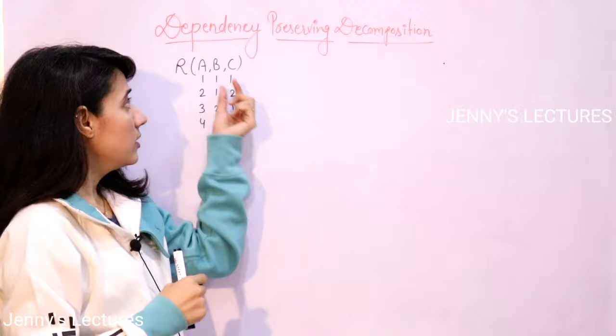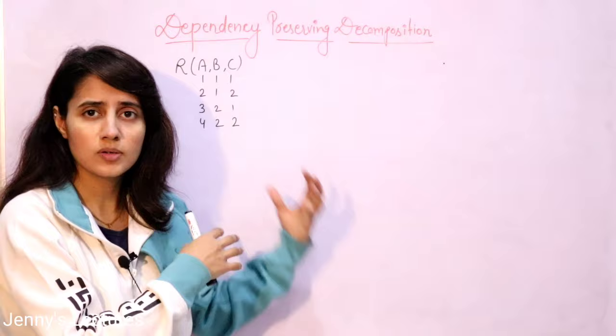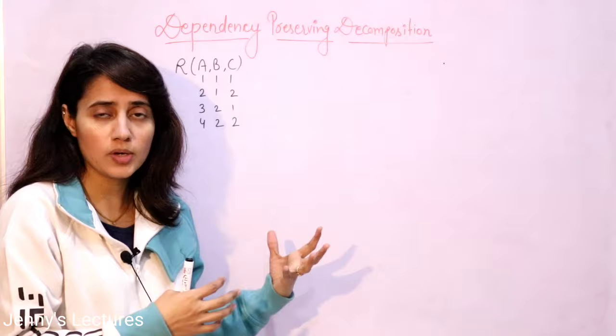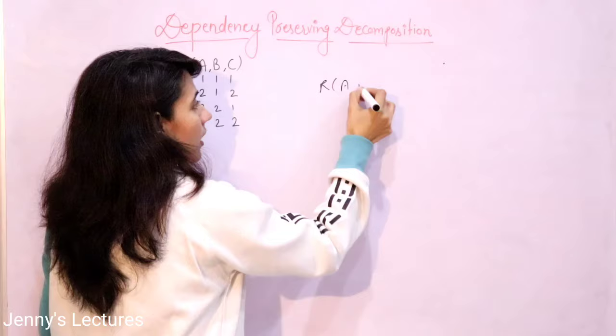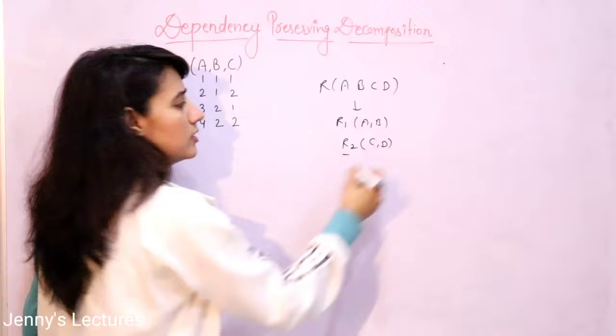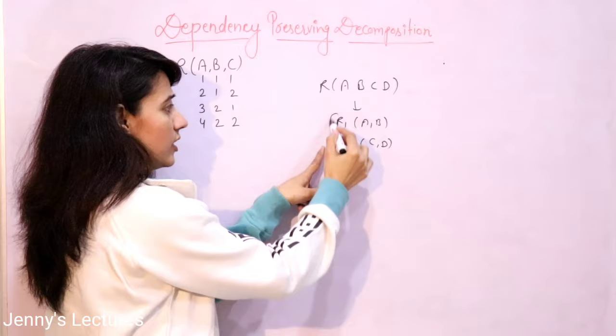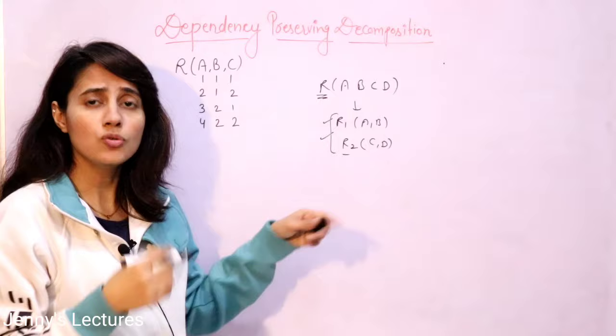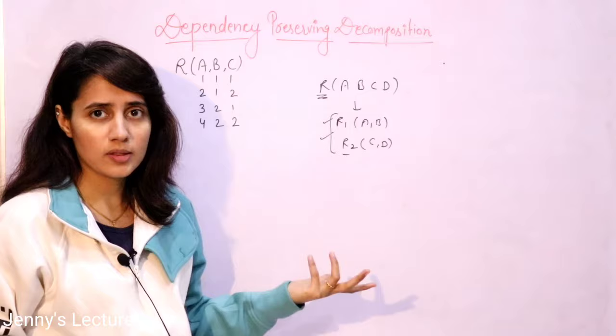Suppose a given relation is in second normal form. To convert it into a higher normal form, you have to decompose this relation into sub-relations — you have to divide this relation. But it's not like that: suppose a relation is given having A, B, C, D — four attributes — so you just divide into R1 having A and B, and R2 having C and D, and that's it. You have to follow some properties. The decomposition must follow some properties.